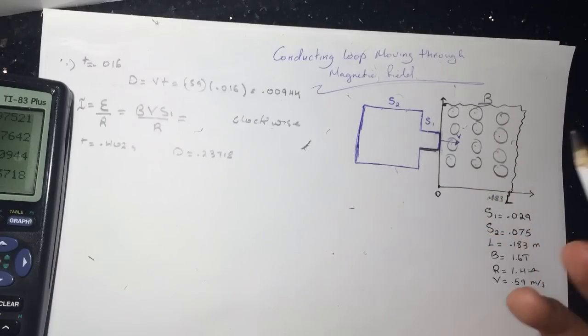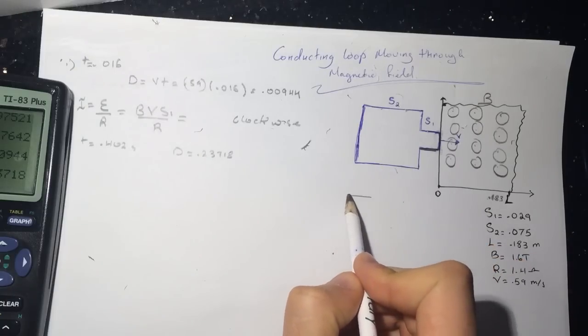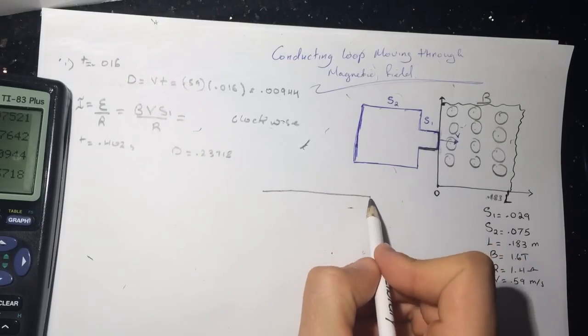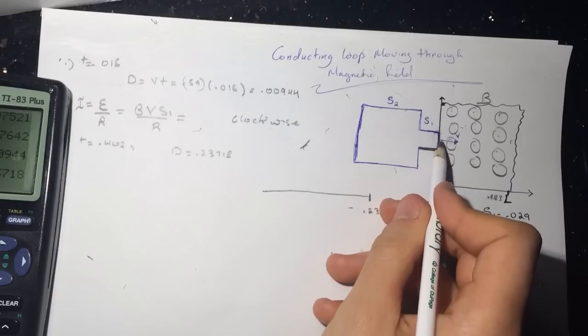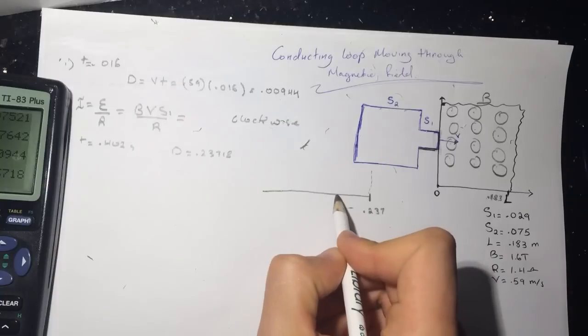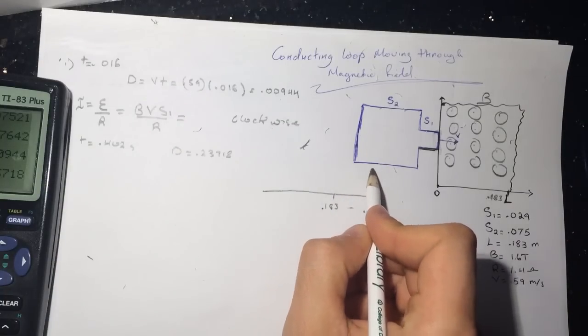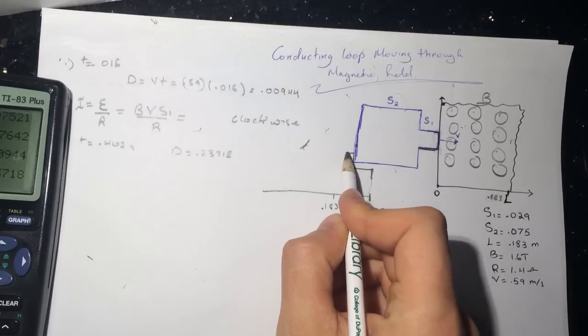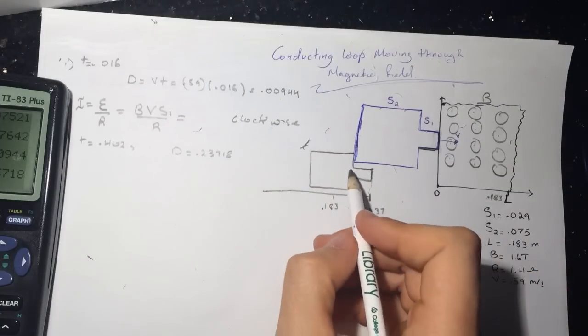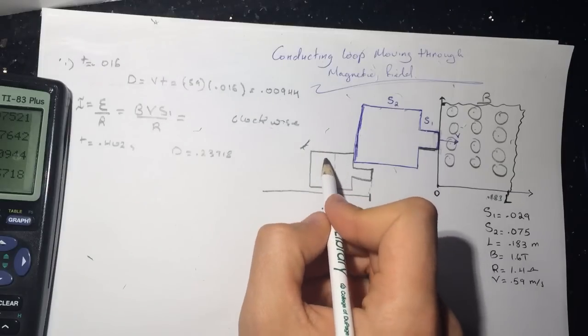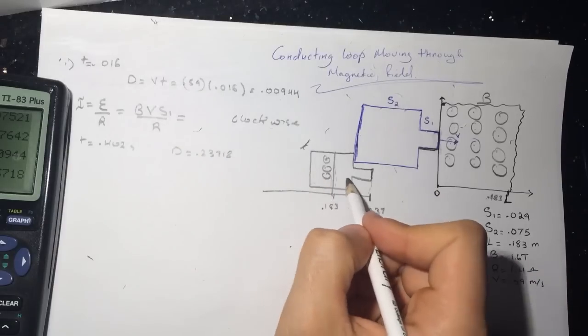So that means that this guy will be already out, and this guy is going out now. So it's kind of going to be looking like this. So this is 0.237, this is where the S1 will be, and 0.183. So this guy will be around here. This is where it's still in the magnetic field. This is where it's stopped. So now this guy is going out.